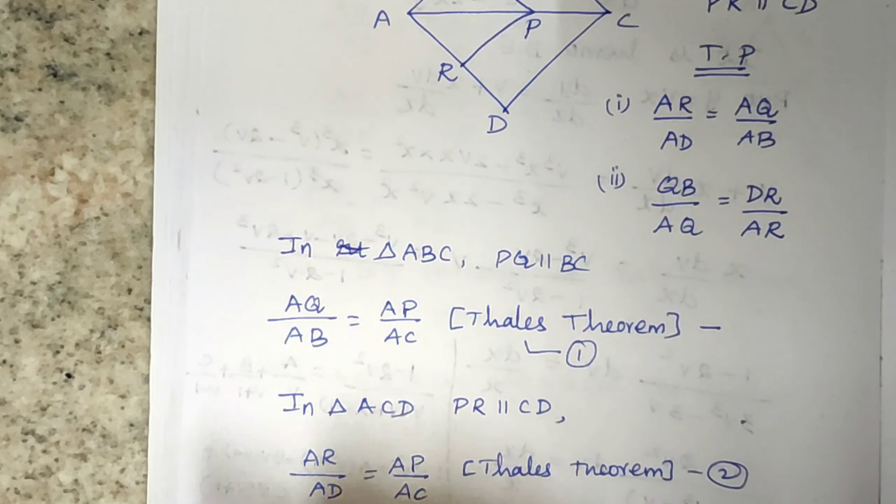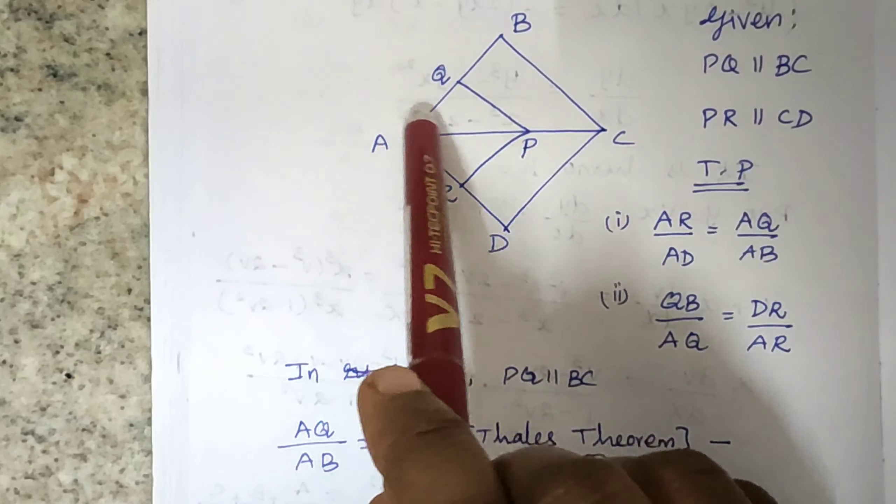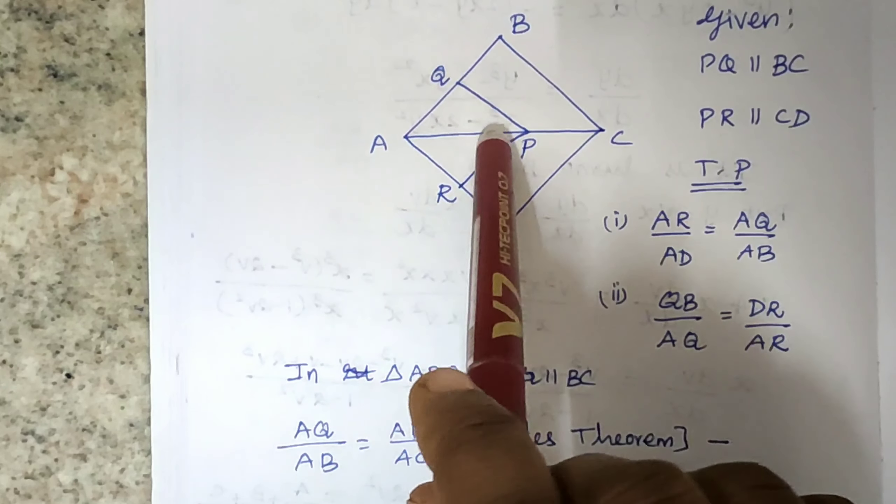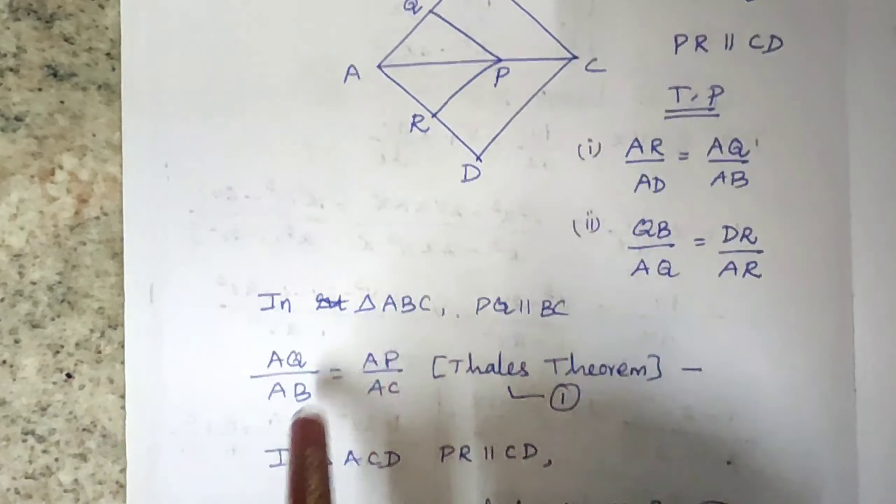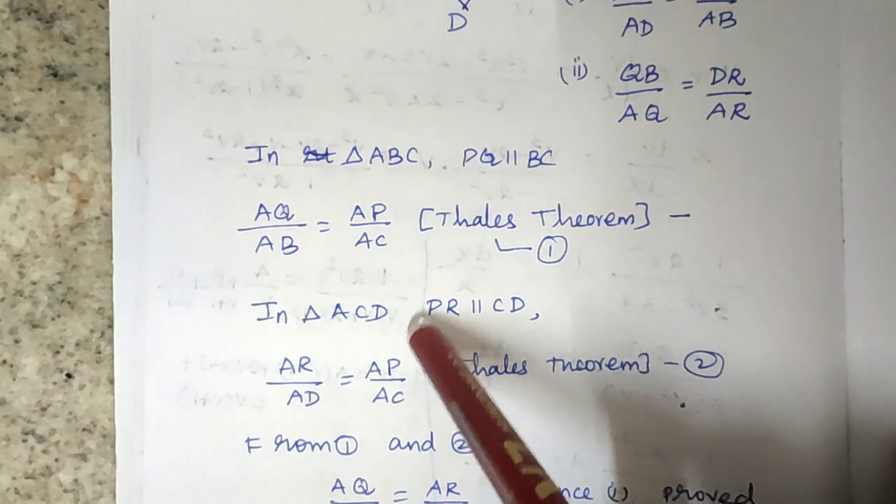Next, in triangle ACD, PR parallel to CD. So again, AR by RD equals AP by PC. So this is the second equation.